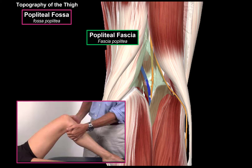Clinically, you can use the popliteal fossa to palpate for the pulse of the popliteal artery by flexing the leg slightly, as you see here.